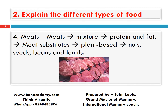If you want to remember the plant substitutes for meat, visualize the meat and imagine four different things coming out from it in four directions: nuts coming out on one side, seeds on another, beans on another, and lentils on the last side. Visualize they are coming out of meat in all four directions — then it sticks very well in your mind.